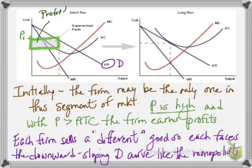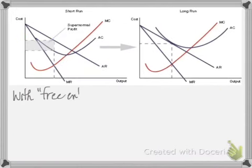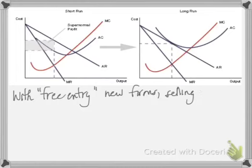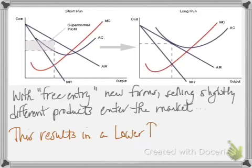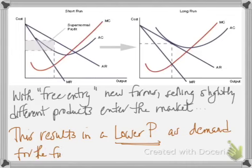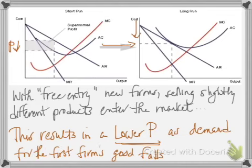The problem comes in as these new firms enter with the free entry characteristic. They're going to suck away some of the business from the existing firm. So as that happens the price is going to have to fall and as the price falls the profits for that firm also fall.